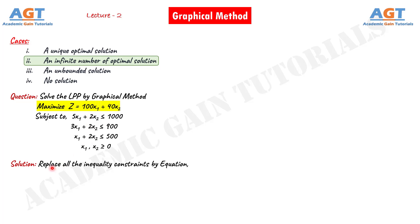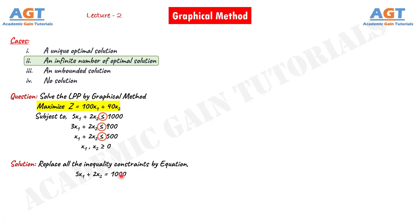At first, we will replace all the inequality constraints by using equations. We can see three inequalities in these three equations. We will simply replace all these three inequality or in-equal signs by using equal signs and convert them into equations. The first equation will be 5x1 plus 2x2 equals to 1000. The second equation will be 3x1 plus 2x2 equals to 900, and x1 plus 2x2 equals to 500. So all three inequalities are converted to three equations.